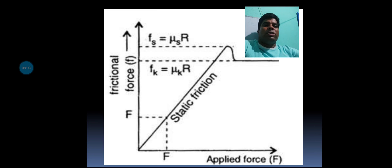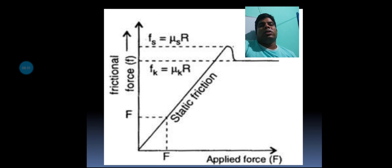This is the diagram of applied force versus frictional force. In static friction, the graph increases diagonally between the two forces with no changes. In actual cases, sliding friction equals mu_s times R, rolling friction equals mu_k times R, and static friction is a diagonal value between these two.